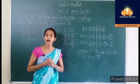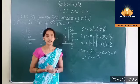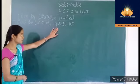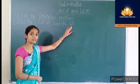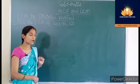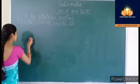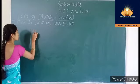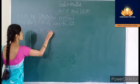Then let us learn how to find out the LCM by division method. Find the LCM of 144, 96, and 160 by division method. Now we have to divide these three numbers by prime factors.